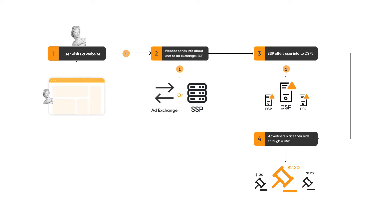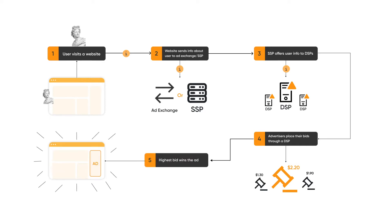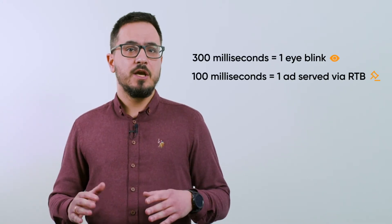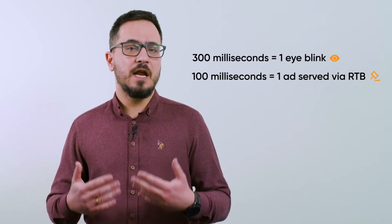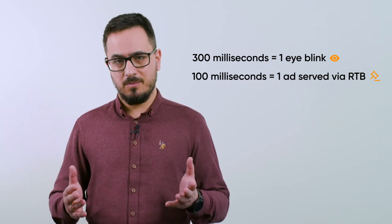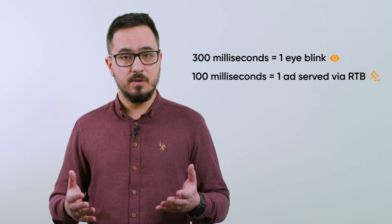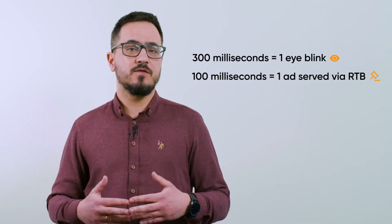Advertisers automatically bid on this placement based on preset targeting options, CPMs, and optimization through a DSP. The highest bidder wins the slot, and their ad is displayed on the website. The RTB auction is automated and lasts mere milliseconds. Besides automation, its obvious benefit is that it makes publishers' ad inventory available to as many potential buyers as possible, maximizing the likelihood of selling the slot for the best price.